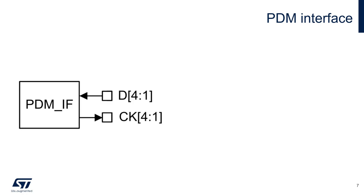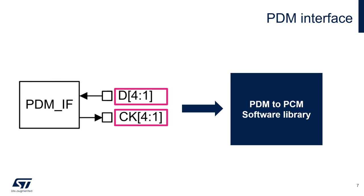The PDM interface is able to generate the clock for the microphones and acquire the data on several data lines on both edges of the clock, without the need of an additional timer to halve the clock as in the I2S case. Please note that with SAI the PDM to PCM conversion library is always needed. The PDM interface helps in the acquisition of multiple microphones but it does not perform PDM to PCM conversion in hardware.